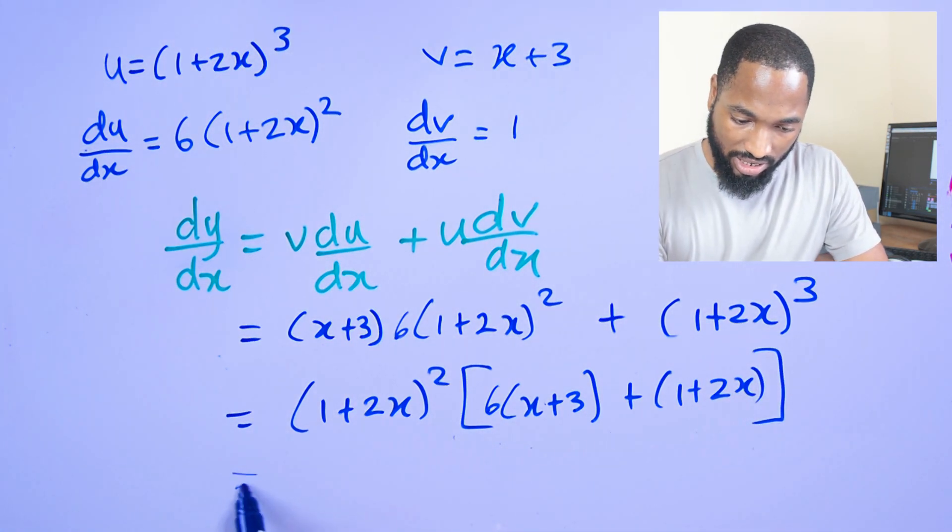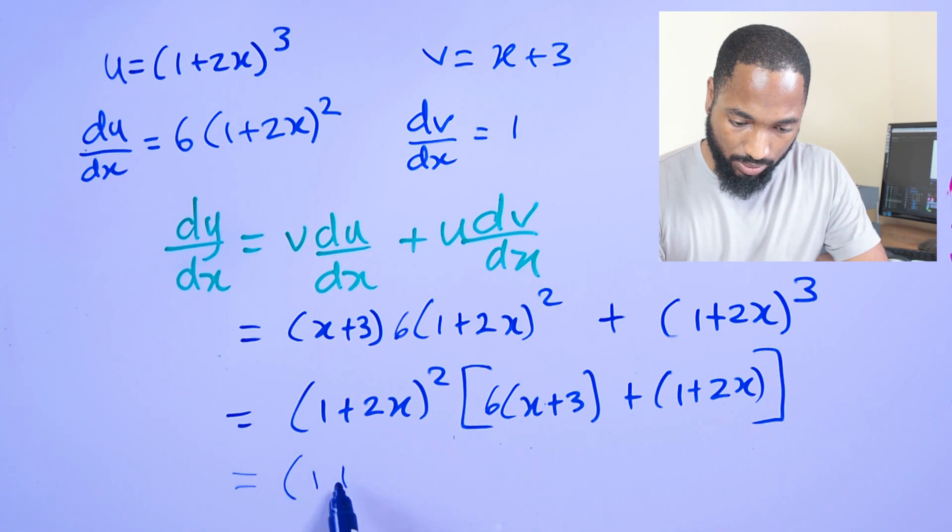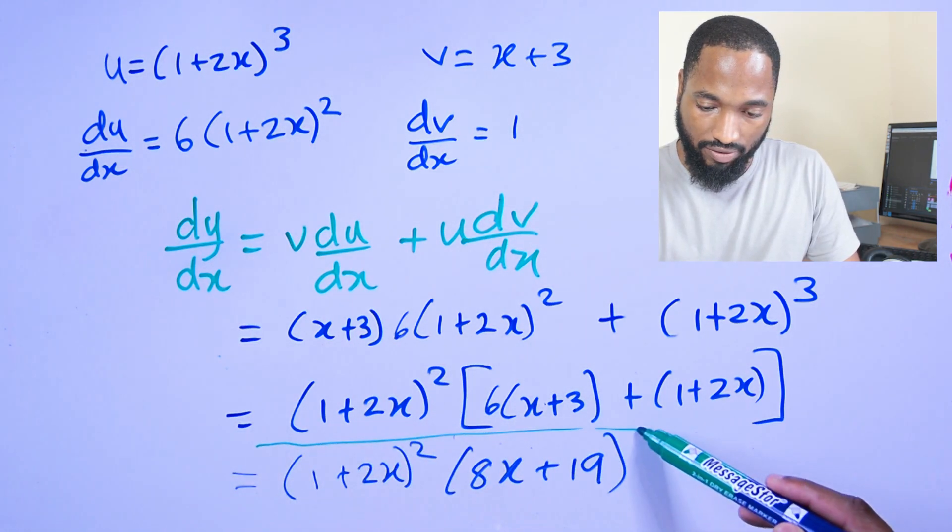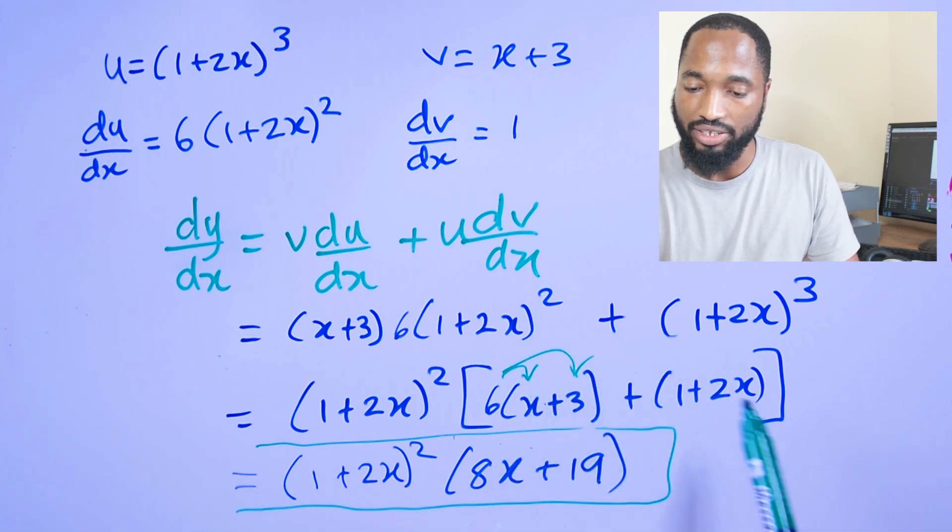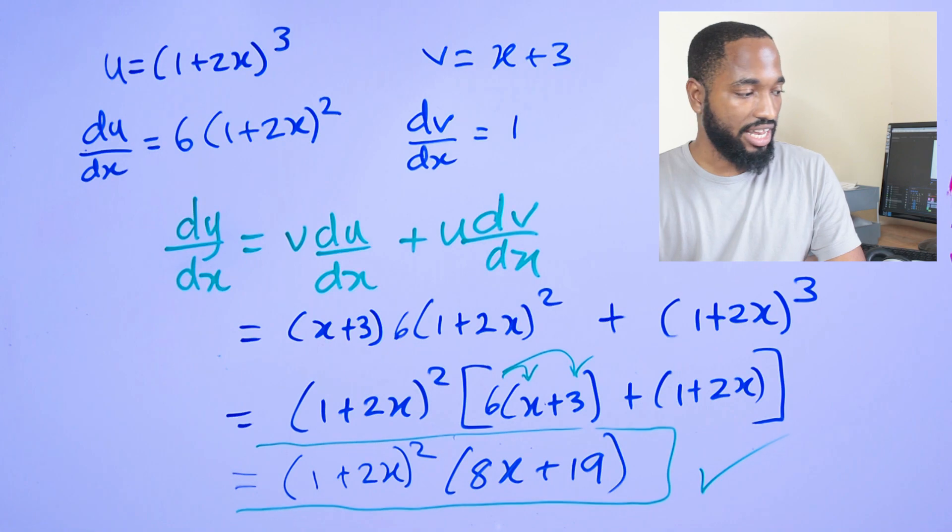That can simplify by factorizing out (1 + 2x)² to give me this, and I can simplify more into this. If I expand the brackets and simplify, I'll get this in the end. This is your answer. That's the end of that question.